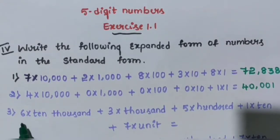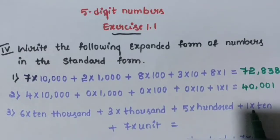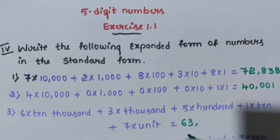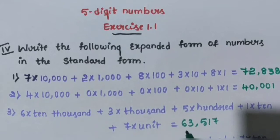Question number 3: 6 into 10,000 plus 3 into 1,000 plus 5 into 100 plus 1 into 10 plus 7 into unit. So 6 is in the 10,000 place, 3 is in the 1,000 place, 5 is in the 100 place, 1 is in the 10s place, and 7 is in the units place. The answer is 63,517.